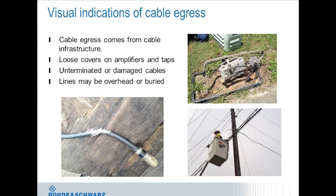Cable egress is also somewhat easy to locate because signals must be coming from the cable TV infrastructure. The most common physical sources are lines, taps, and amplifiers — anything connected to the hard line. Leakage from taps and amplifiers is usually caused by loose covers. Unterminated lines can act as antennas, creating widespread egress. Cable damage can come from many sources — including animals chewing through cables, which is more frequent than one might expect. Cables may be overhead or buried, and underground cable breaks can lead to substantial egress levels over the air.